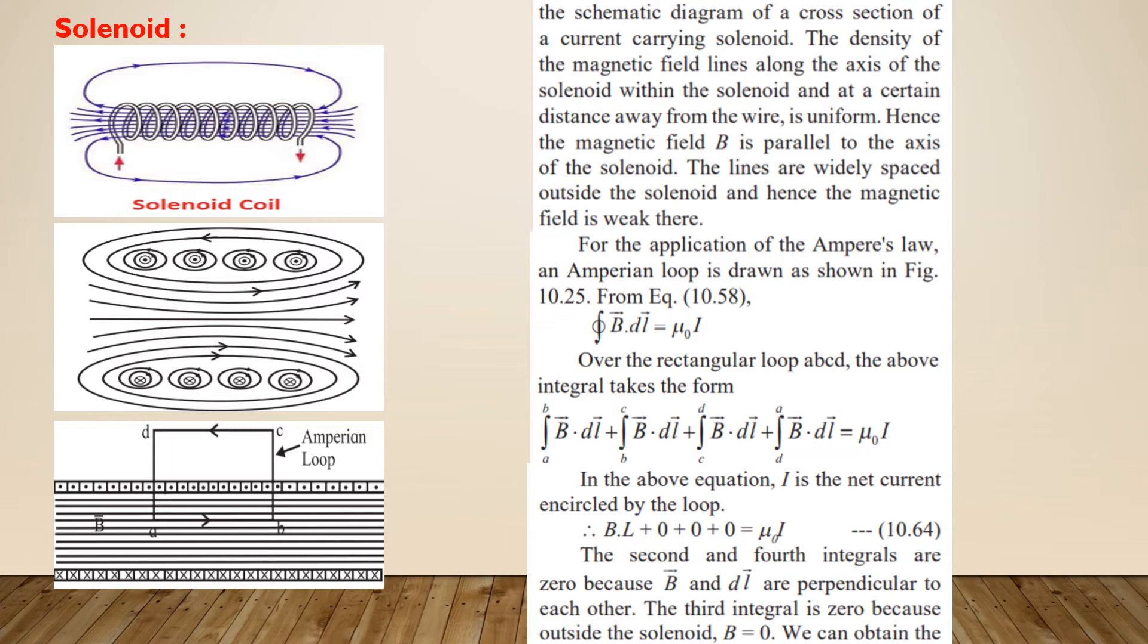According to Ampere's law, taking line integral over all the four segments of the loop gives the expression as integral B dot DL from A to B plus integral B dot DL from B to C plus integral B dot DL from C to D plus integral B dot DL from D to A is equal to mu0 I.